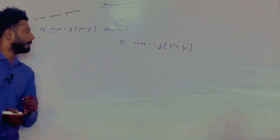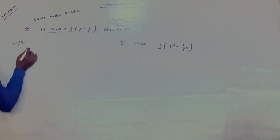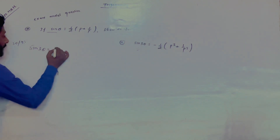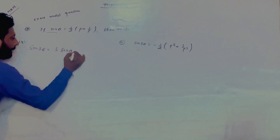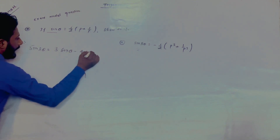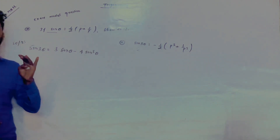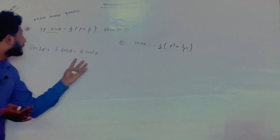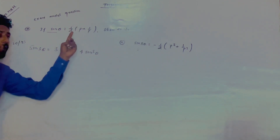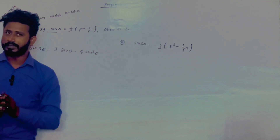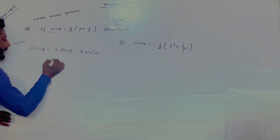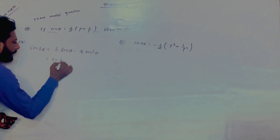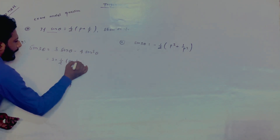Solution: sin 3 theta formula is 3 sin theta minus 4 sin cubed theta. Wherever sine appears, we place 1 by 2, p plus 1 by p. So: 3 into sine theta — replace sine with 1 by 2, p plus 1 by p.